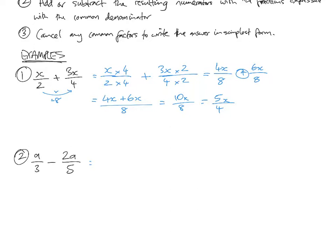Next, we have a on 3 take 2a on 5. Here's an example why I suggest doing this method instead of trying to find the lowest common denominator. If you're not good with your 3 times tables and 5 times tables, it might take you a while. Instead, just times them out straight away. 3 times by 5 is 15. That's our common denominator.